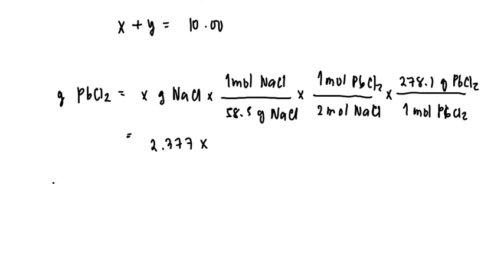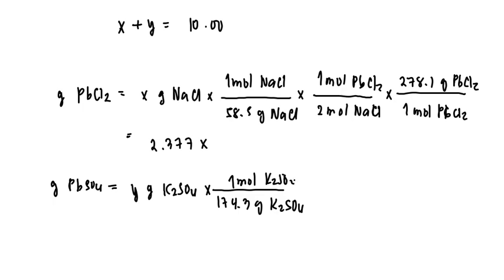We'll do the same but this time solve for the mass of PbSO4 formed from y grams of K2SO4. Divide this by the molar mass of K2SO4, which is 174.3. That means 174.3 grams of K2SO4 is one mole of K2SO4.